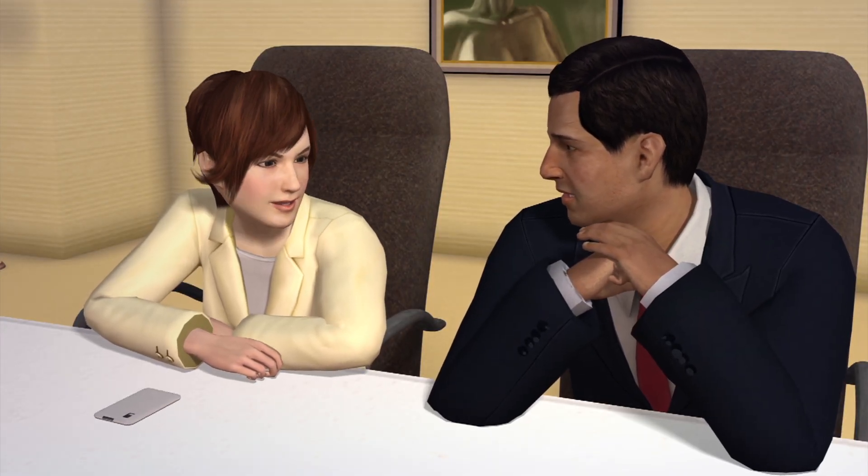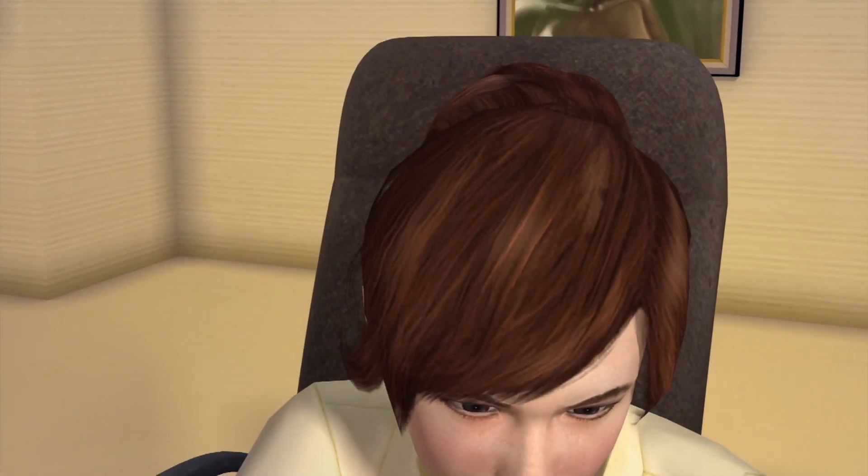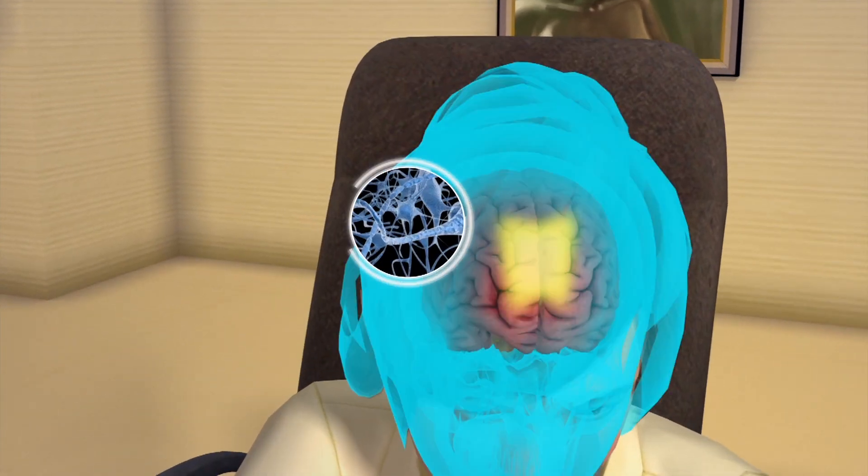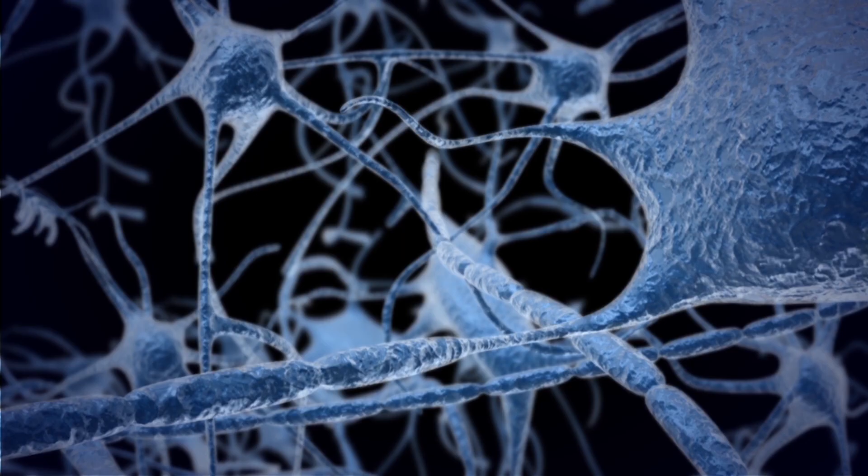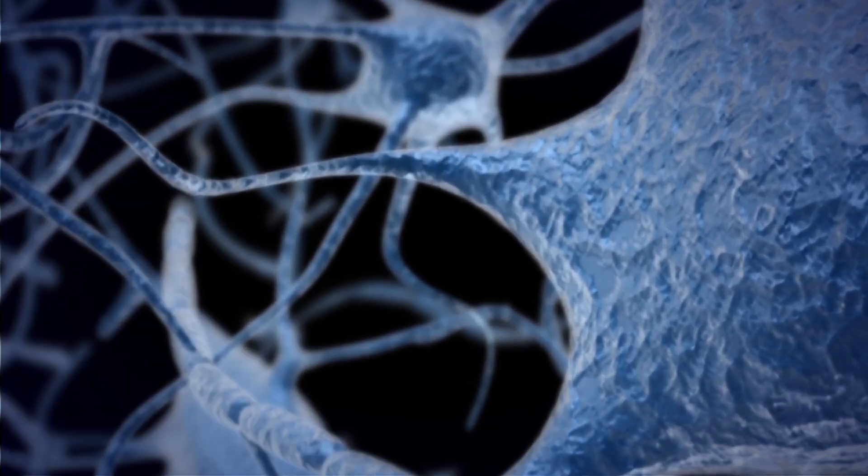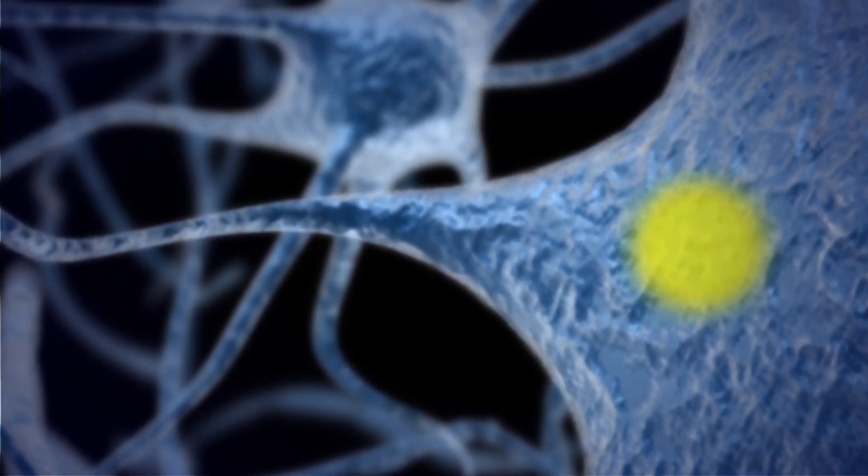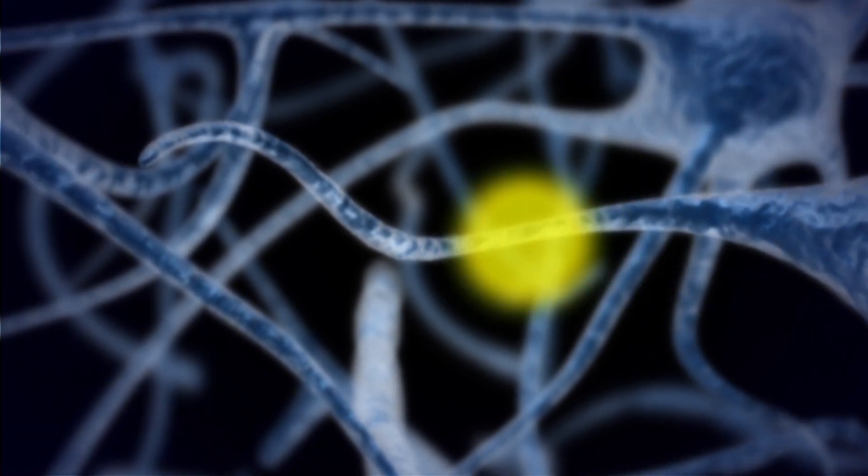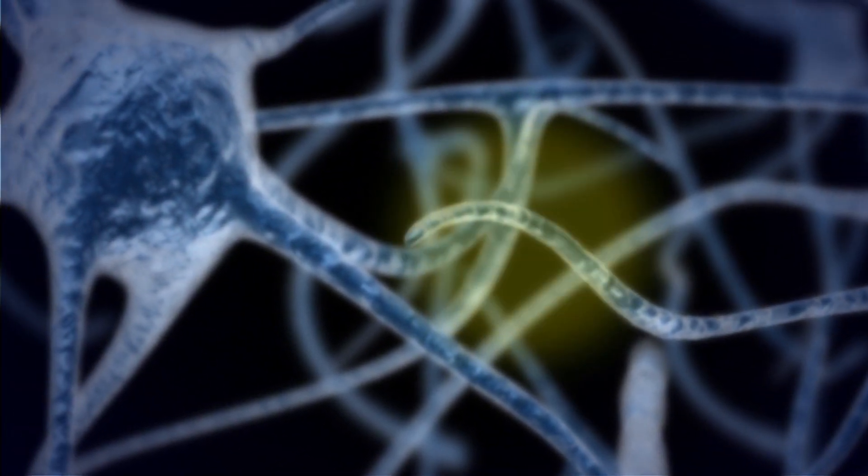When we receive a notification on our phone, the neurons in the ventral tegmental area of our brain become excited. This excitation generates an electrical signal called an action potential, which travels to a neuron's presynaptic terminal in the area of our brain called the nucleus accumbens.